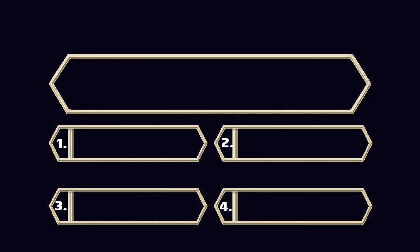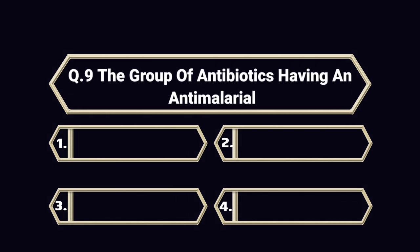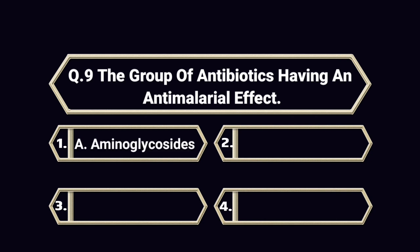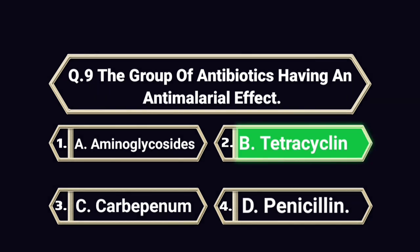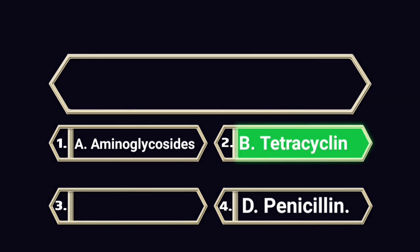Question number 9. The group of antibiotics having an anti-malarial effect. A. Aminoglycosides. B. Tetracycline. C. Carbapenem. D. Penicillin. Answer is B. Tetracycline.